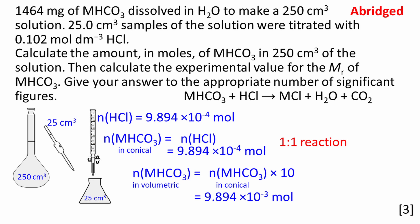25.0 cm³ of MHCO3 was used in each titration. The original solution of MHCO3 was 250 cm³, probably made up in a volumetric flask. Multiply the amount of MHCO3 in the conical flask by 10 to work out the amount of MHCO3 in the volumetric flask. This works out to be 9.894 × 10⁻³ moles.